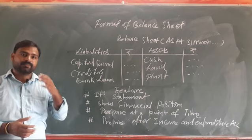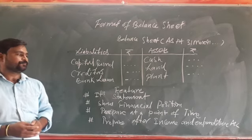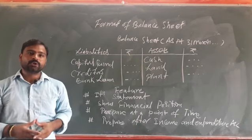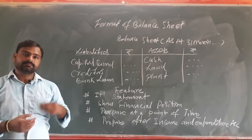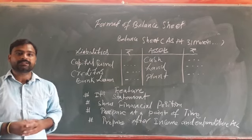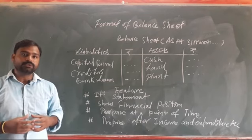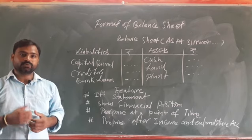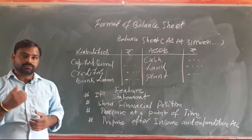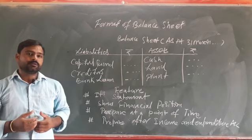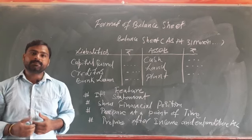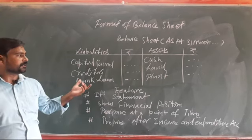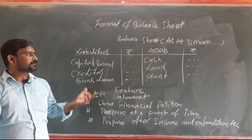Assets are the things which are owned by the organization — things used for generating revenue or for the development of the organization. So the balance sheet has two sides: the liability side and the asset side.